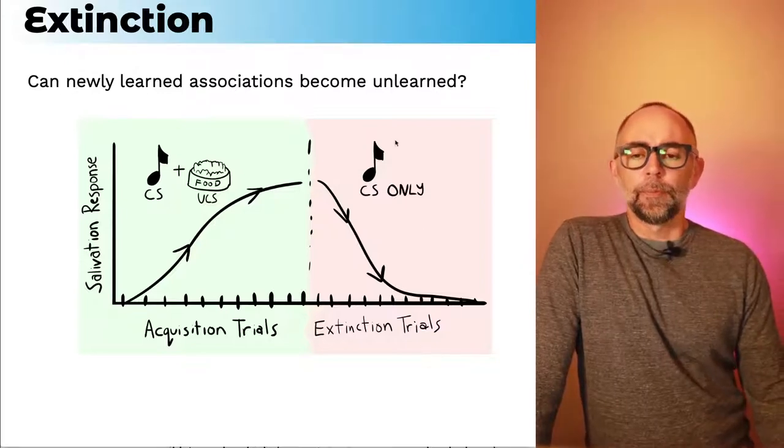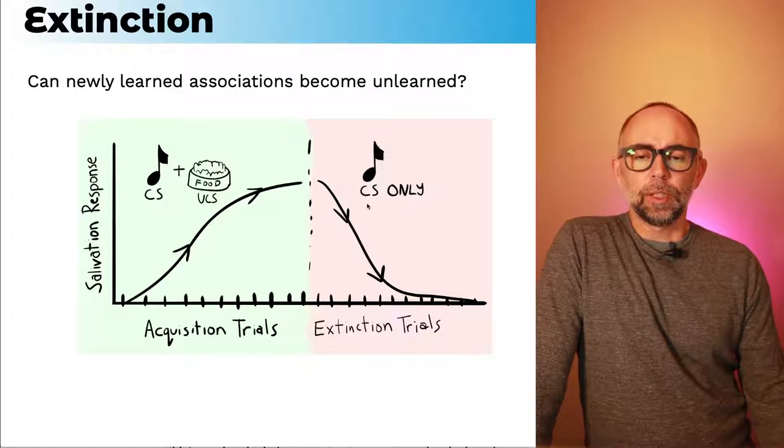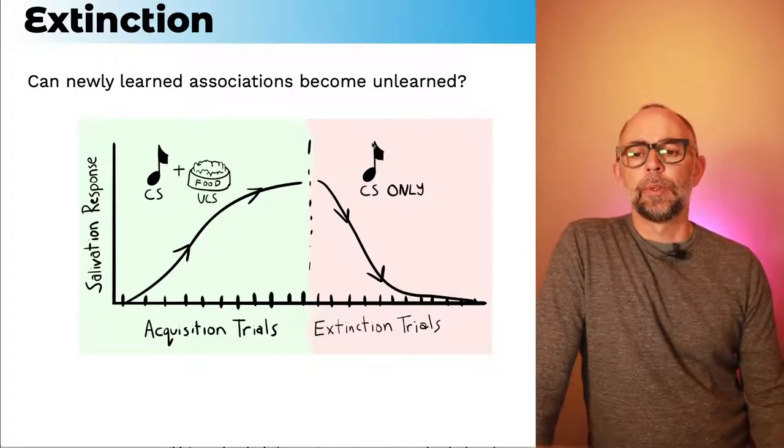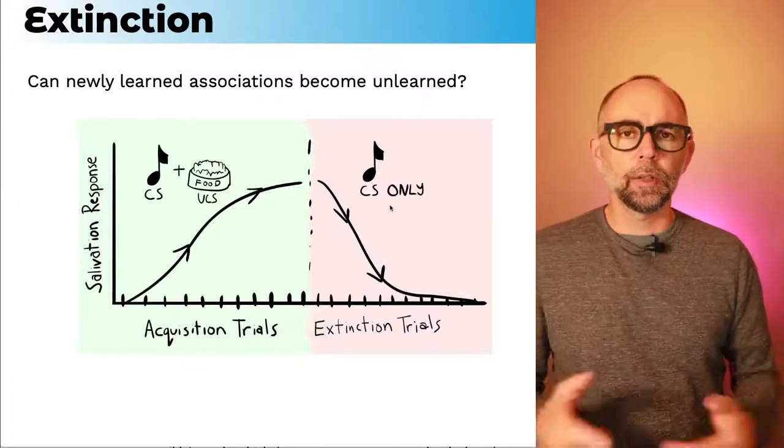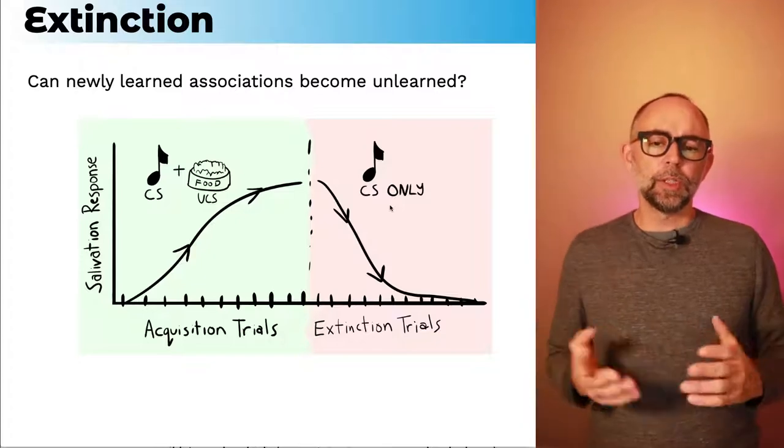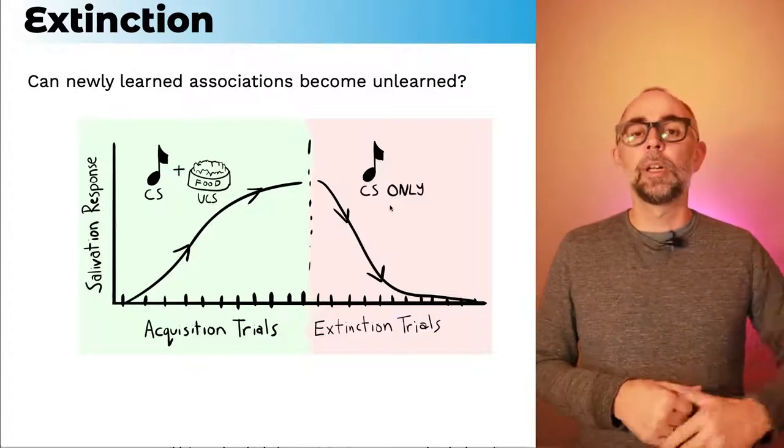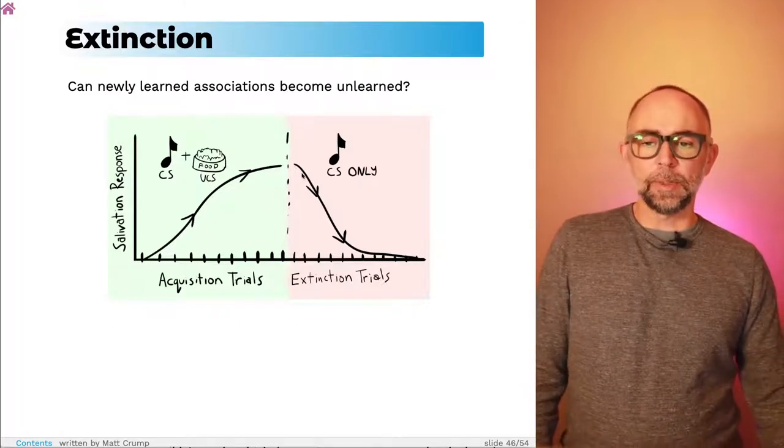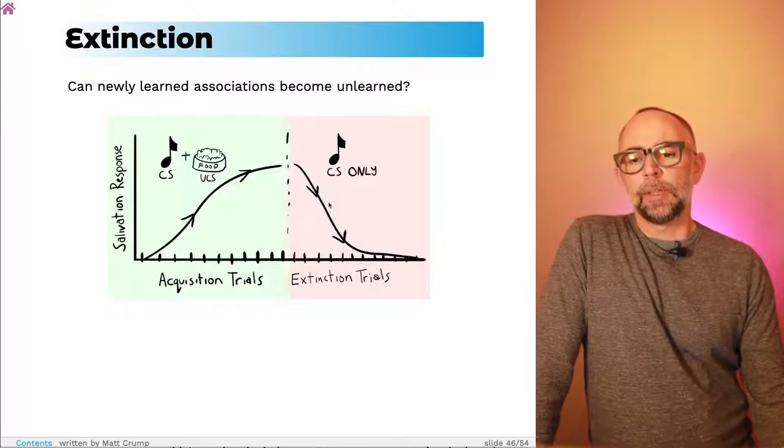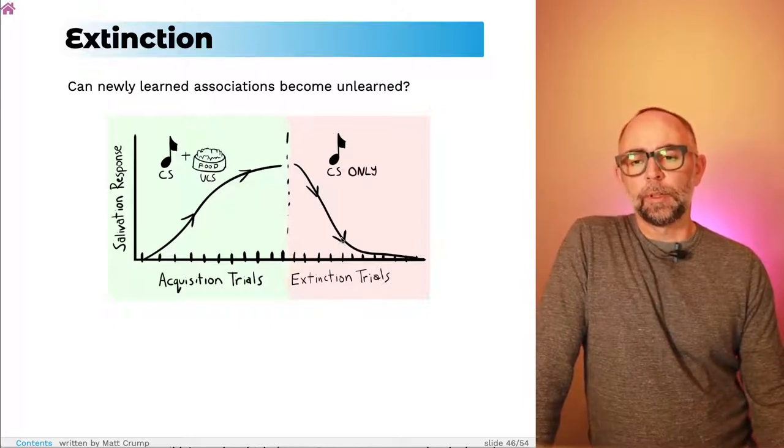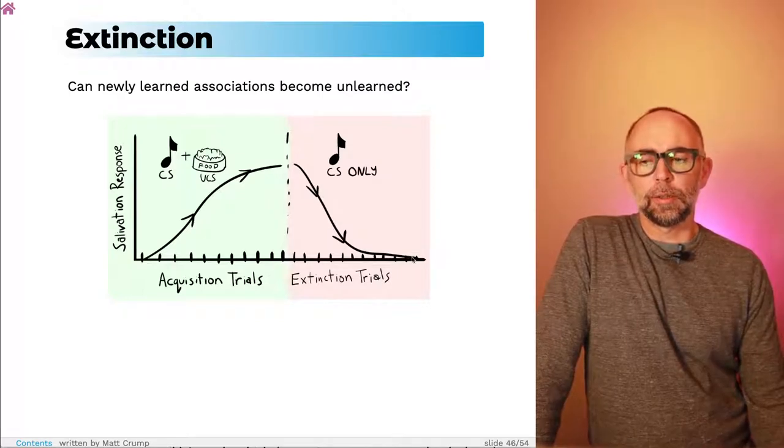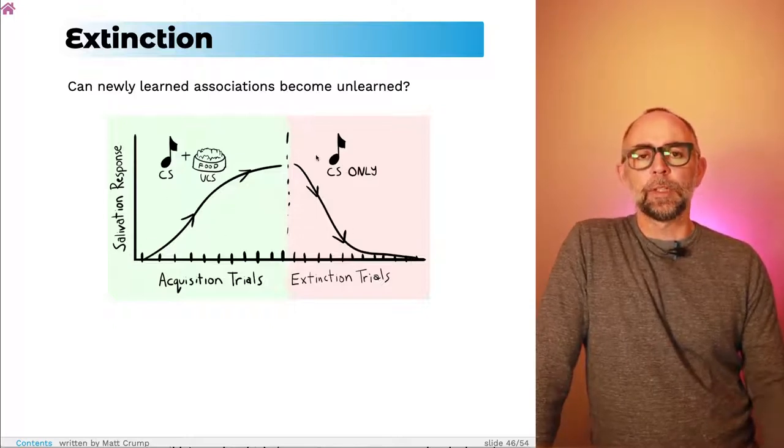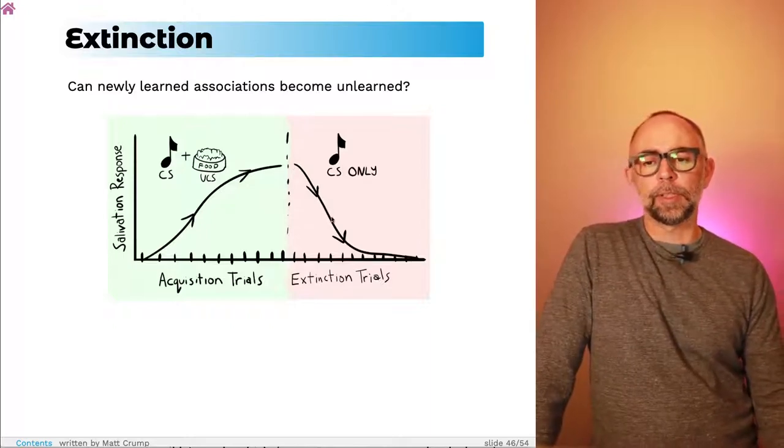In an extinction phase, what happens is the conditioned stimulus or the tone is presented by itself for many times. So this tone no longer gets paired with food. The question is, what happens to the association between the tone and the food? And I've sort of indicated that in the picture. What actually happens is that over time, the presentation of the tone will elicit a smaller and smaller conditioned response. So in this case, the conditioned response is the salivation response. And when you start just presenting the tone a bunch of times, the animal stops salivating to it.